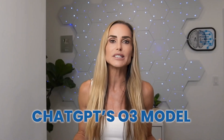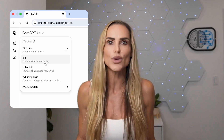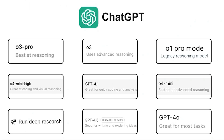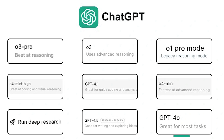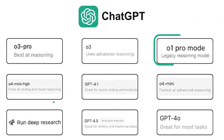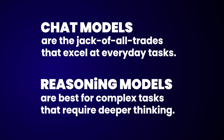To set a task, you need to be using ChatGPT's O3 model. To change the model, tap the ChatGPT drop-down window on the top left of your browser. Different models are good at different things, but it can be confusing remembering which model to use. Here's a trick: there are two main types of AI models — chat models and reasoning models. For ChatGPT, the regular chat models have the letters GPT in front of the number, whereas the reasoning models all start with the number 0, like O3 or O4. Chat models are the jack-of-all-trades that excel at everyday tasks, whereas reasoning models are best for complex tasks that require deeper thinking.